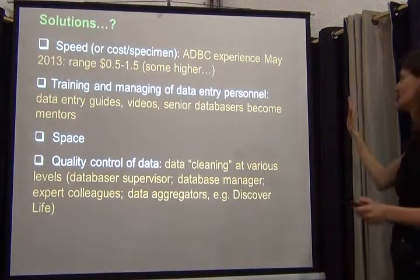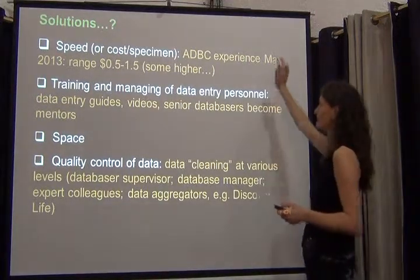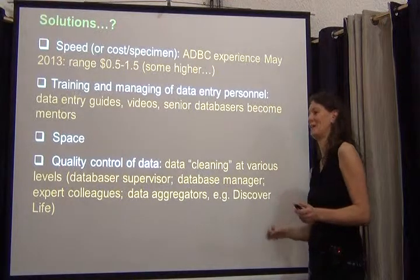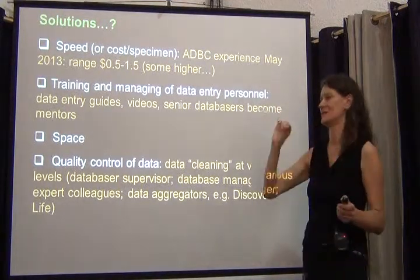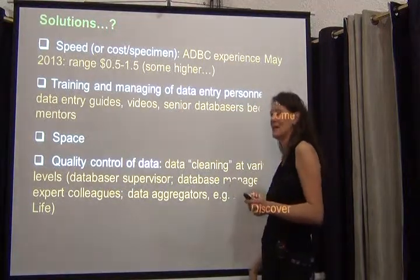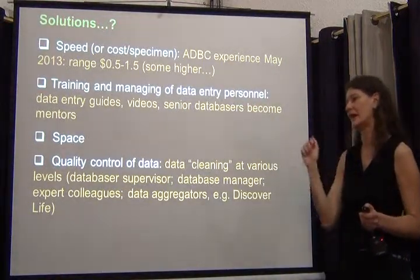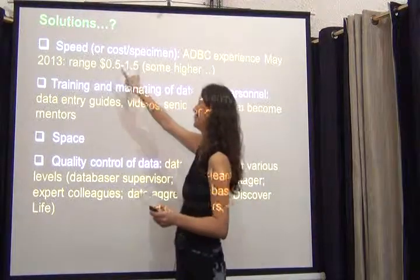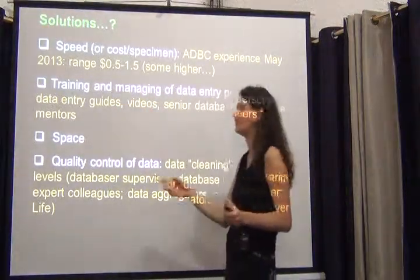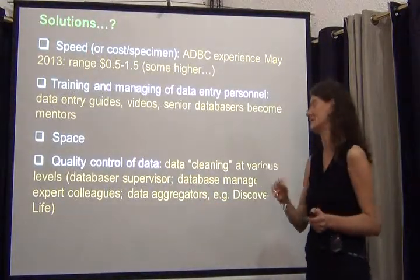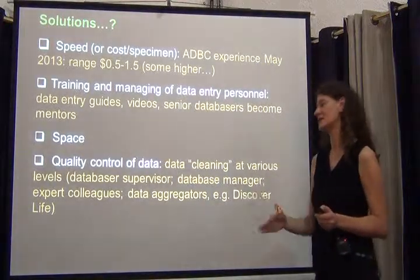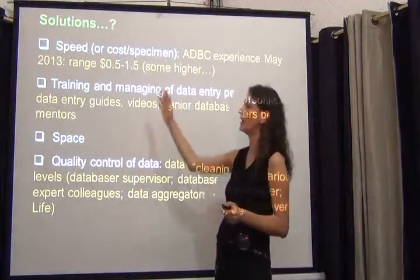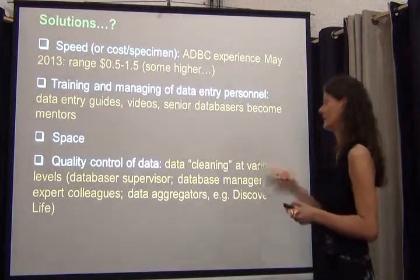On the speed and cost per specimen: the experience from our ADBC project is not glorious. The initial idea from the National Science Foundation when they proposed the ADBC program was to capture specimens for about 10 cents apiece. We're not close — we're spending about 50 cents to $1.50 per specimen as of May 2013. Things have become a little more streamlined since then, but getting below 50 cents per specimen with that approach will be difficult.